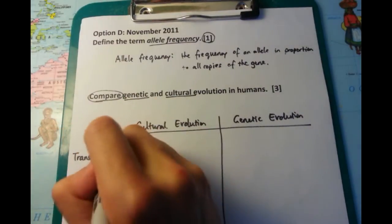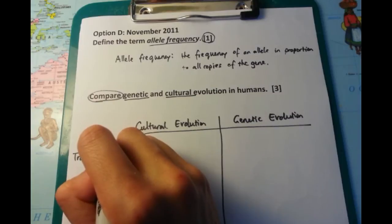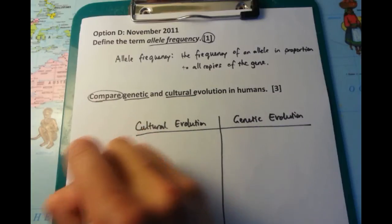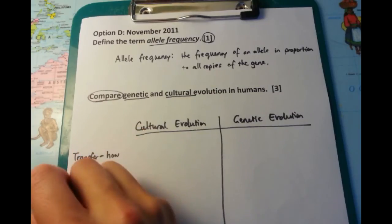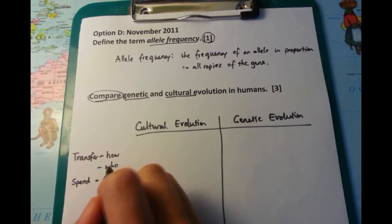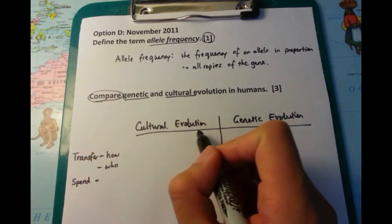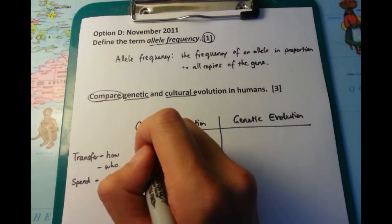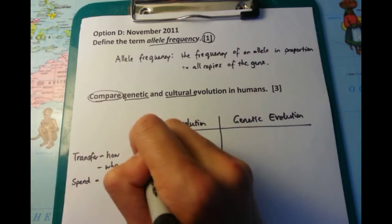What I want to talk about with these is the transfer. How is cultural evolution and genetic evolution transferred from individual to individual, and who can it be transferred to? The final thing I've written down is the speed. Cultural evolution is much faster as opposed to genetic evolution.